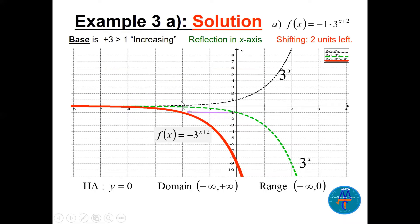Start with the basic dashed graph of 3ˣ — base 3, increasing, passing through (0, 1). Then apply the reflection in the x-axis because of the -1 factor, giving -3ˣ. Then shift the graph up two units. The domain is all real numbers and the range is (-∞, 0) — all negative.